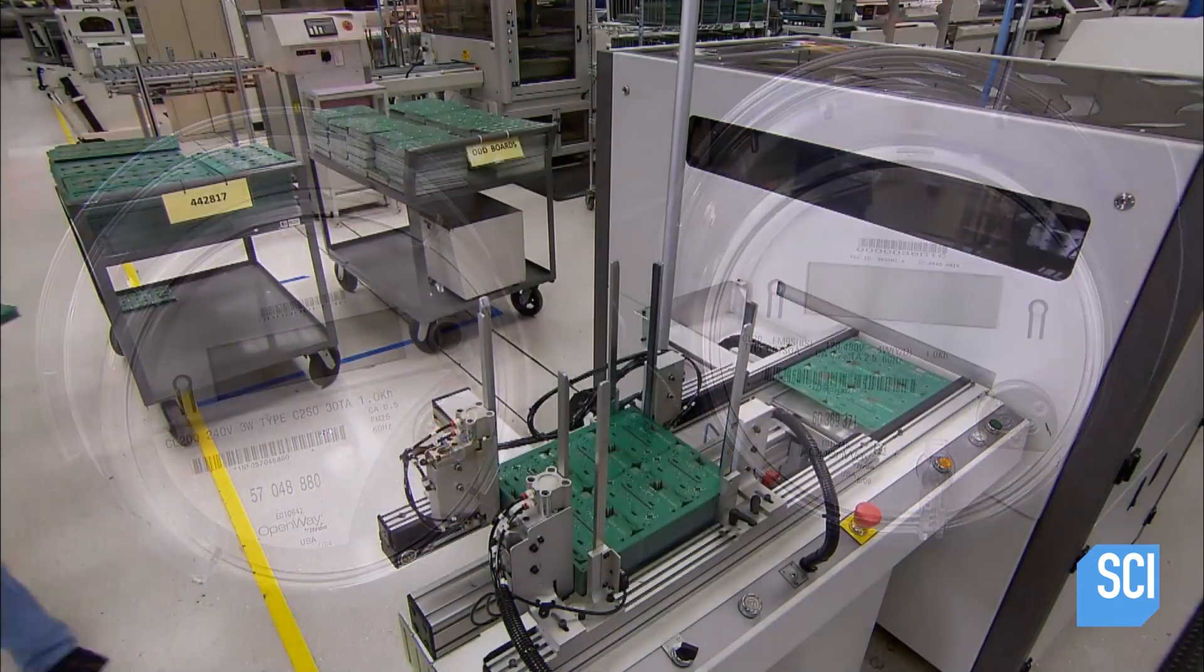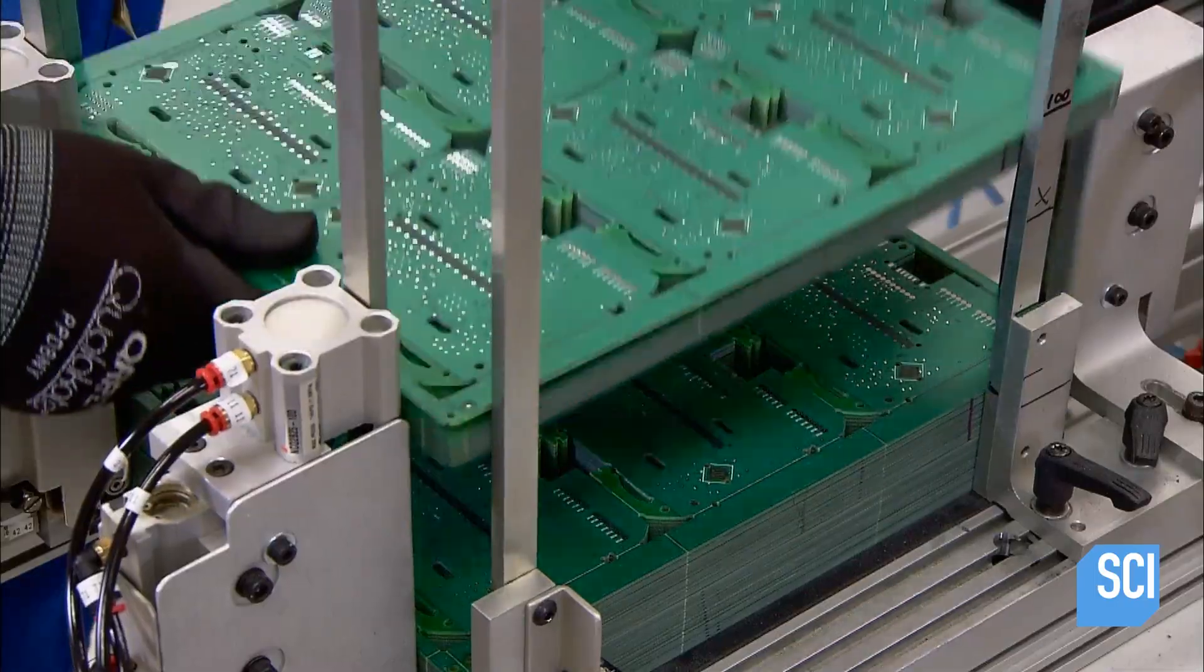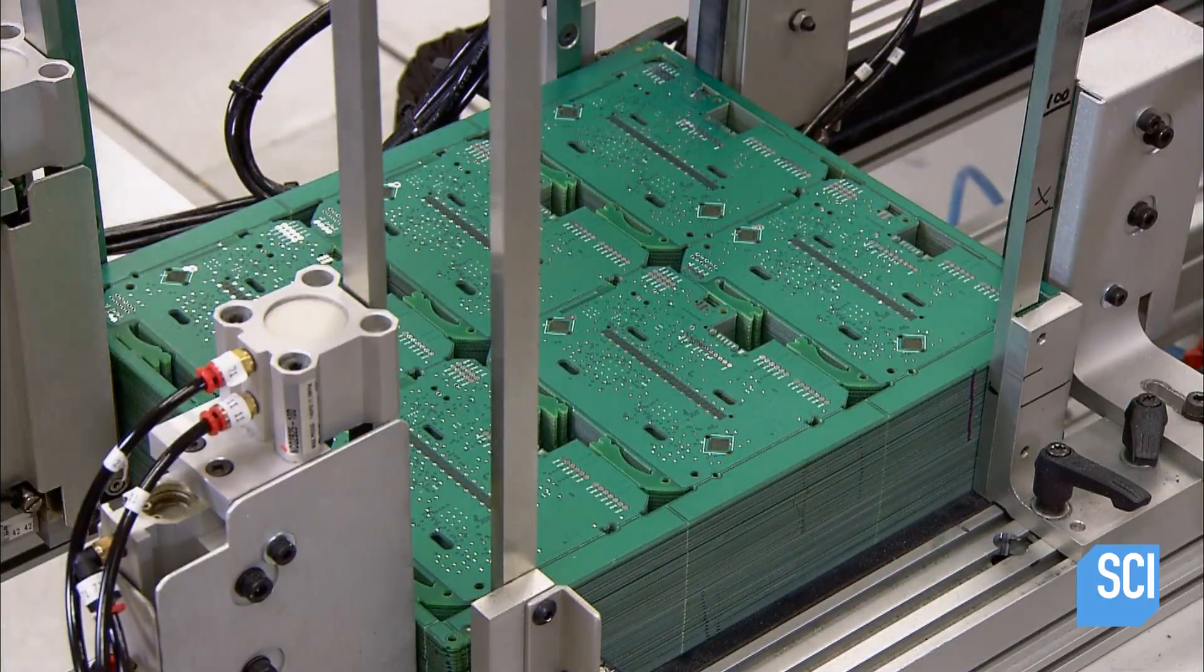Inside the smart meter are three different electronic circuit boards, the brains of the unit. They're built on large blank fiberglass panels.